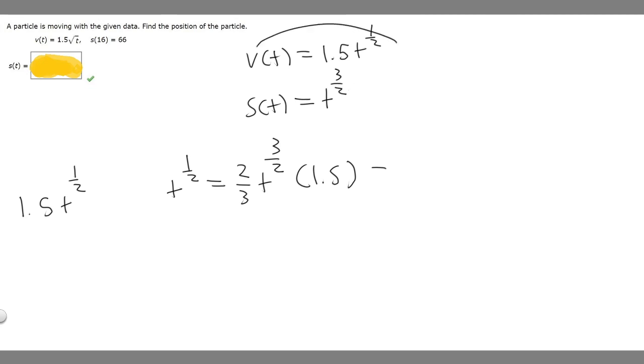And then whenever we take the antiderivative of something, we've got to add plus C. So S(t) is equal to t to the 3/2 plus C. But then we need to find what C is in order to solve this question.